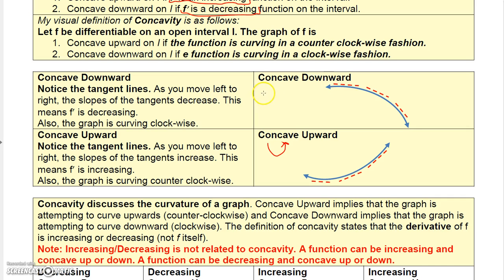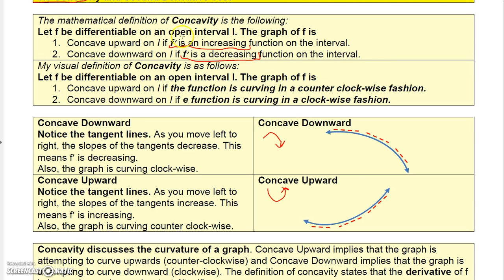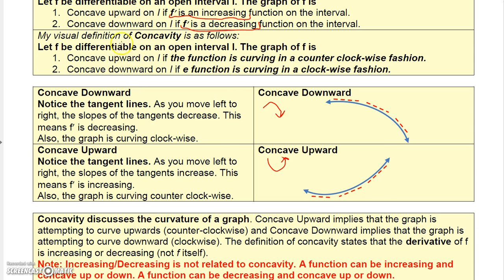For downward concavity, this graph is trying to bend clockwise. The slope of the tangent line starts negative, then it's more negative, then really negative, and even steeper negative — so the slopes of the tangent lines are decreasing. That means the derivative is a decreasing function, so the function itself is concave down. So: derivative increasing means concave upward, derivative decreasing means concave downward.